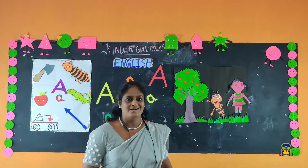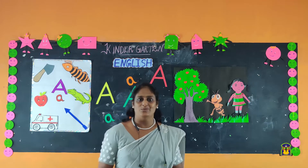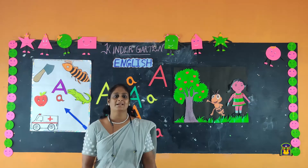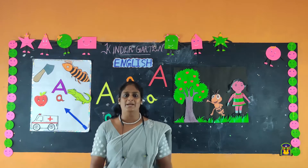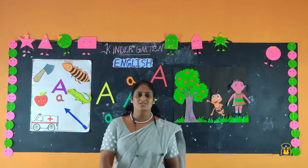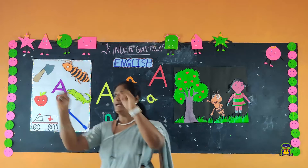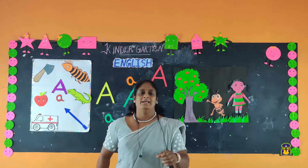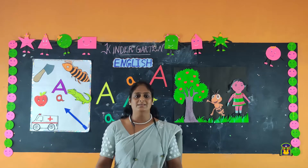Once again, shall we sing with me? Ready? One, two, three, start. The ants go marching one by one, hurrah, hurrah. The ants go marching one by one, hurrah, hurrah. The ants go marching one by one, hurrah, hurrah. The ants go marching one by one,